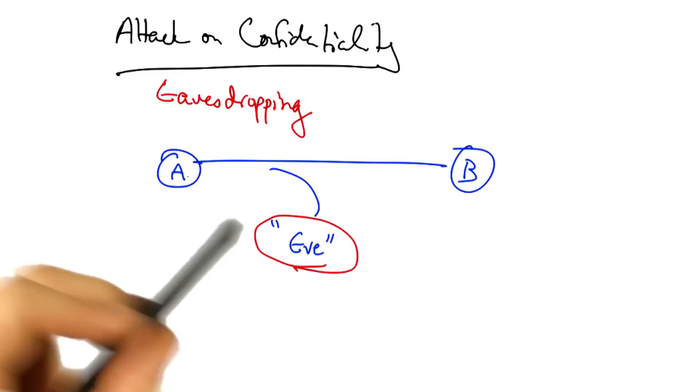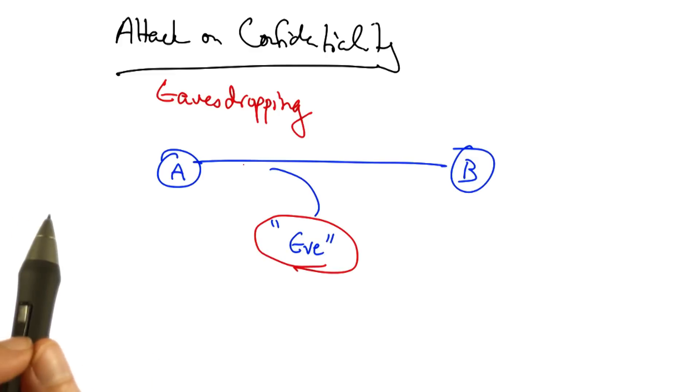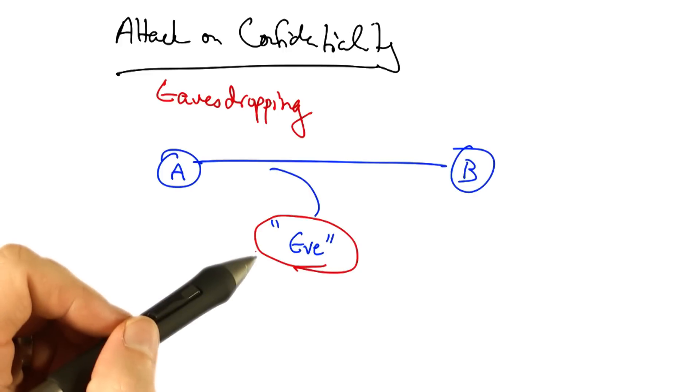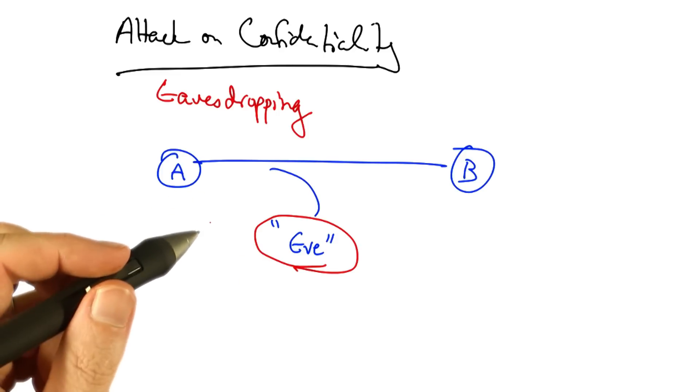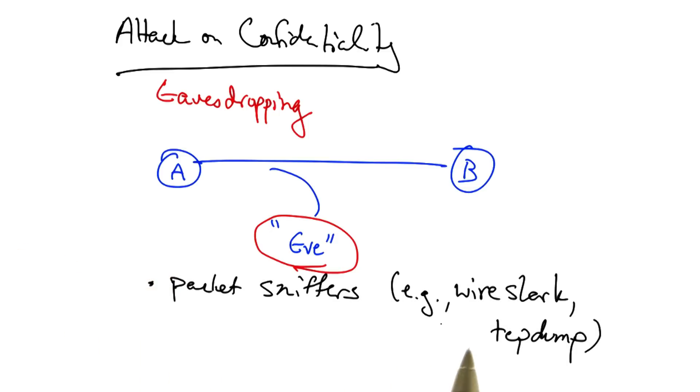For example, if Alice and Bob were chatting on instant message, or if Alice sent an email to Bob, the potential exists. In other words, there is a threat that Eve might be able to hear that communication. There are various packet sniffing tools